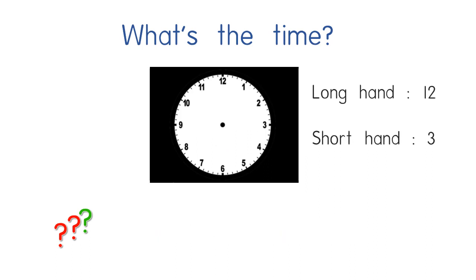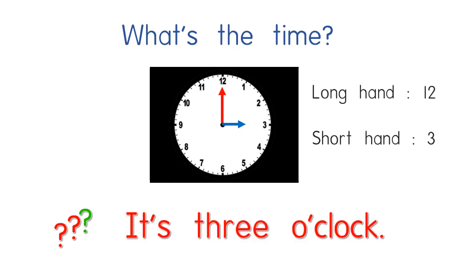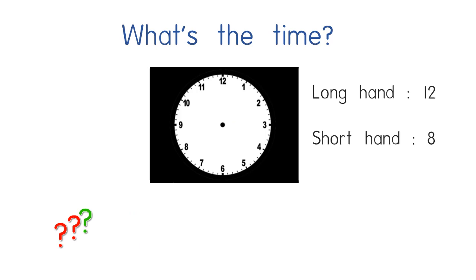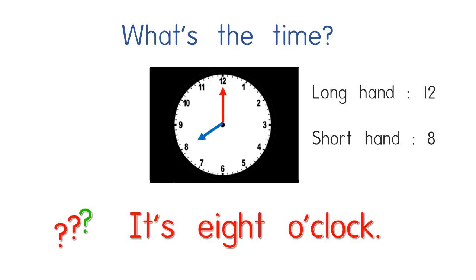Let's look at this example. What if I put the long hand at number 12 and the short hand at number 3? Can you tell me what's the time? Good — it's 3 o'clock. Look here: the short hand means 3 hours. So 3 o'clock — pukul 3 tepat. Next. What if I put the long hand at number 12 and the short hand at number 8? Can you tell me what's the time? We have to look at the short hand first to tell the time. It's 8 o'clock.